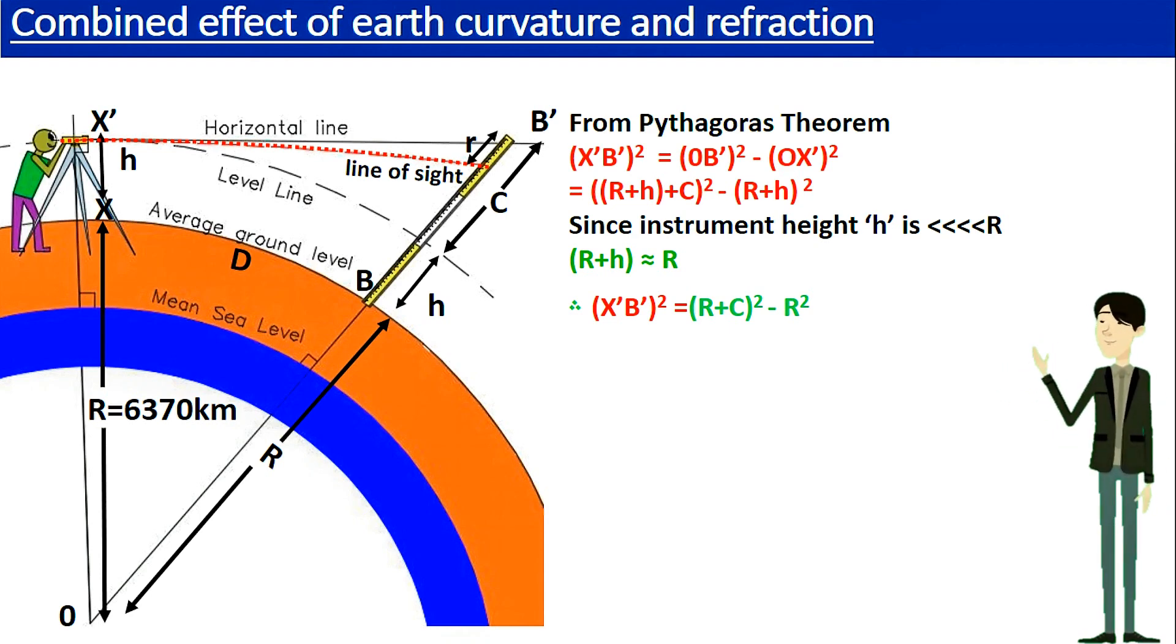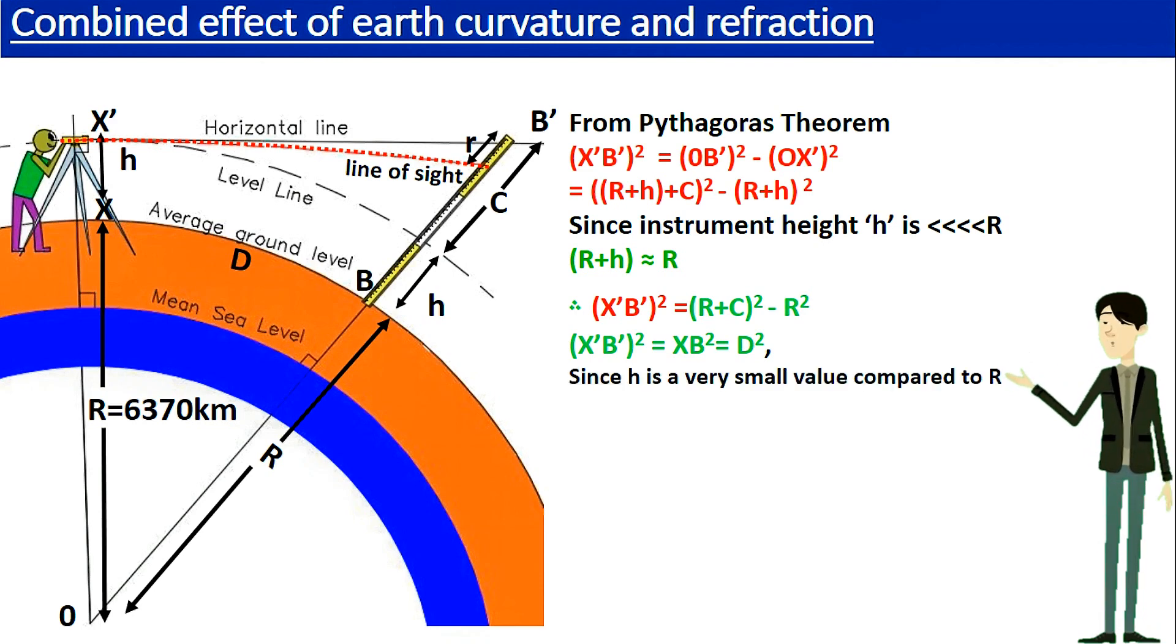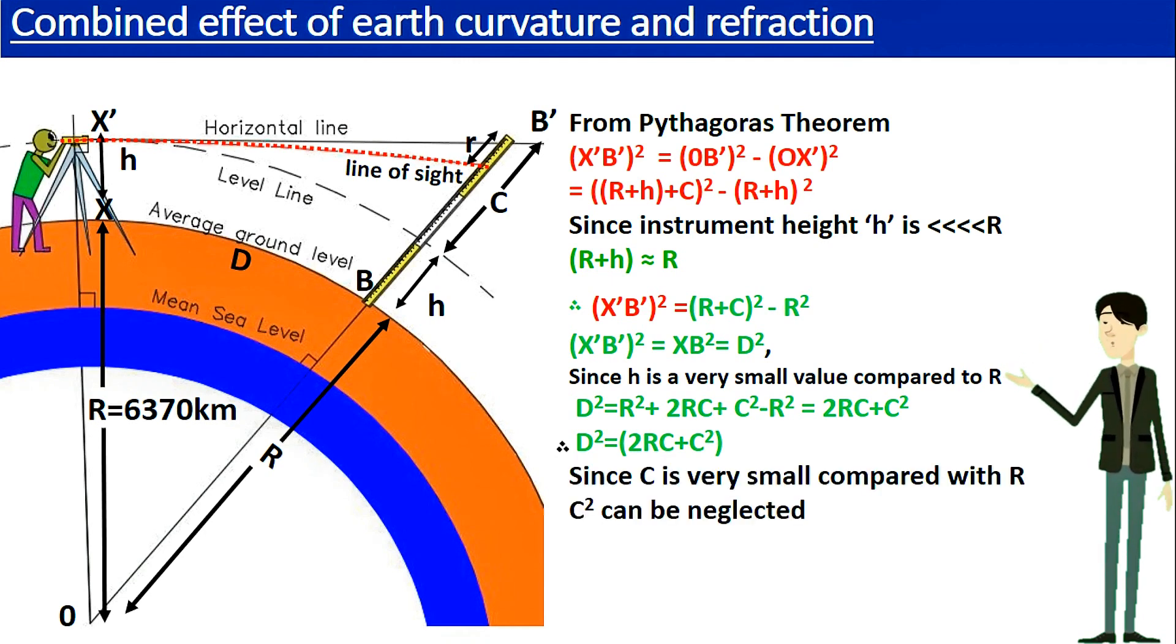Since the instrument height H is too small compared to the radius of the earth 6370 kilometers we can say R plus H is approximately equal to R. Further we can neglect the instrument height H since it is too small compared to the mean radius of the earth. Therefore we can rearrange the equation and neglect the term C squared. Now we can simplify the equation as follows. Earth curvature error C is equal to D squared upon 2R.